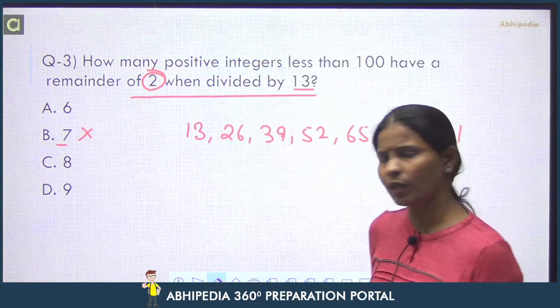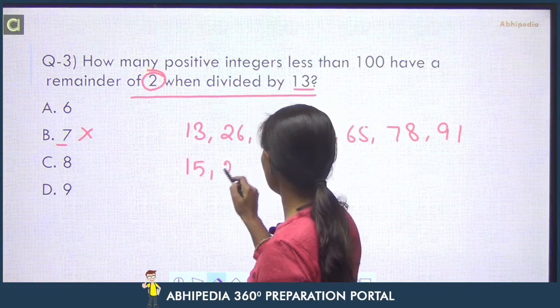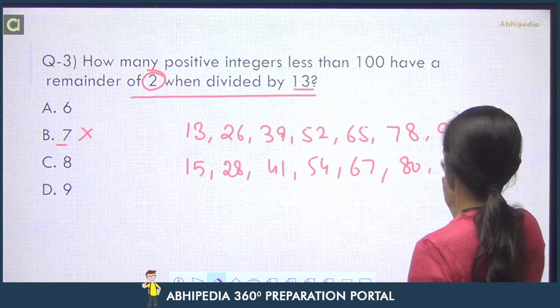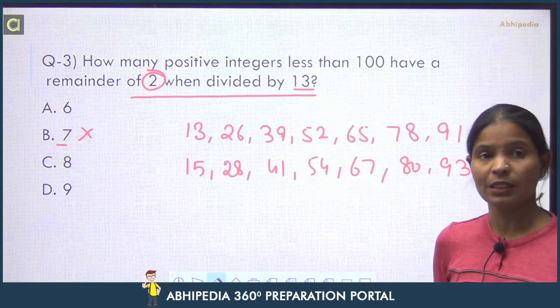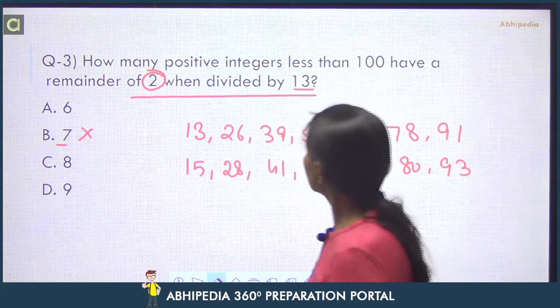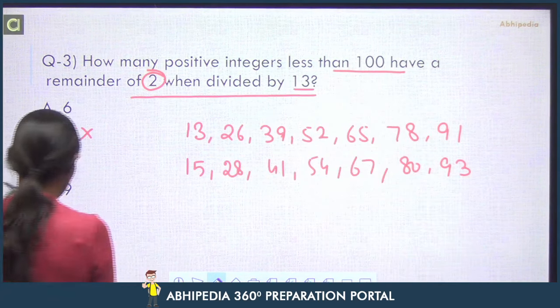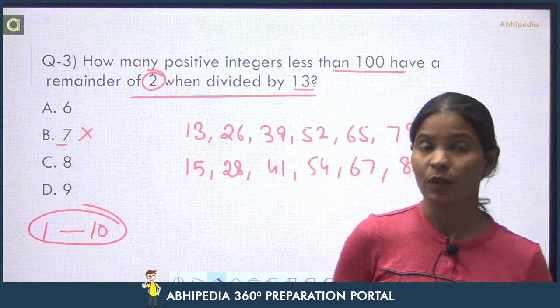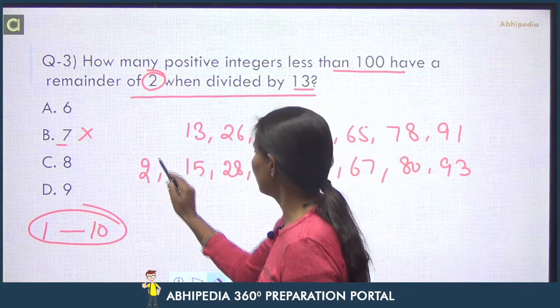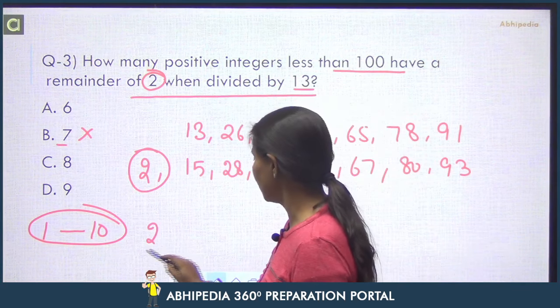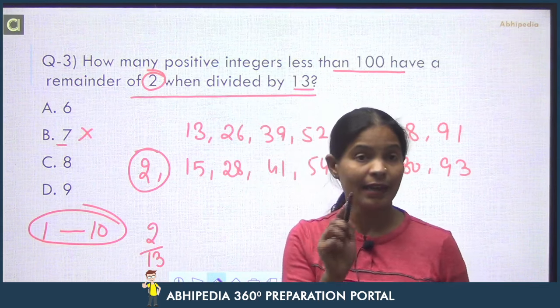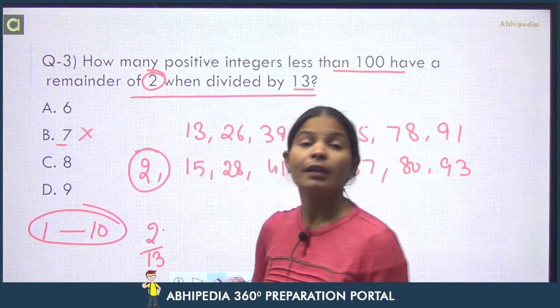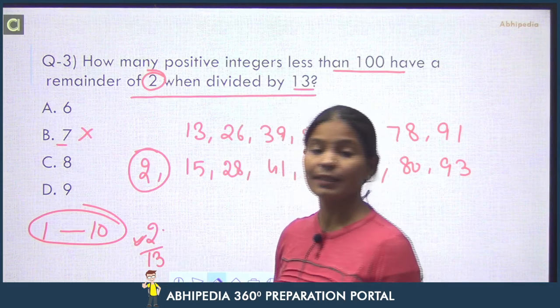If remainder is 2, then divisible numbers plus 2 will give remainder 2. The numbers are: 13, 26, 39, 52, 65, 78, 91. If I add 2 to all, I have 15, 28, 41, 54, 67, 80, 93. When divided by 13, all have remainder 2.